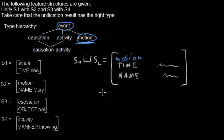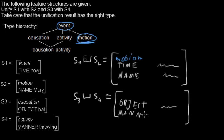I will unify S3 with S4, and the result will again contain all properties of S3 and S4. So we have the object with a value and from S4 manner with another non-conflicting value. And now the type of the result.